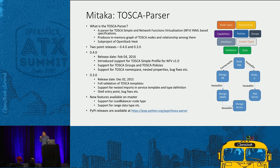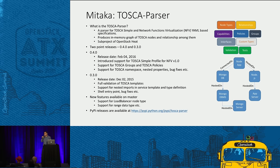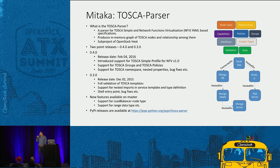Besides NFV, we continue developing against the TOSCA Simple Profile specs. We added new features to parse things like TOSCA groups — a notion in TOSCA to group different nodes so that common operations and policies can be applied on them. We also added parsing support for TOSCA namespaces, nested properties, and custom types. Working with Project Indigo members like CERN, they brought a lot of good use cases using many custom types, so we found certain enhancements needed and addressed them as bug fixes.